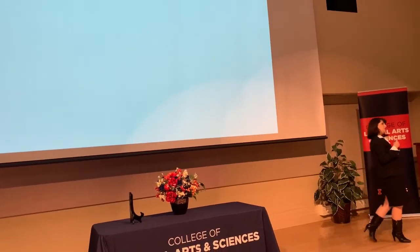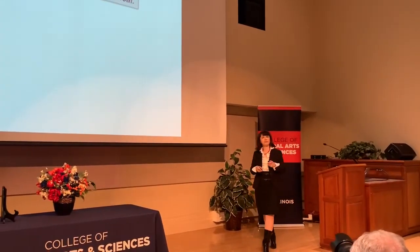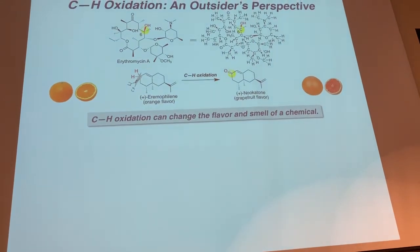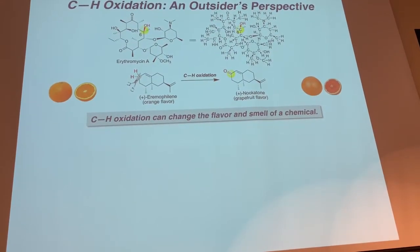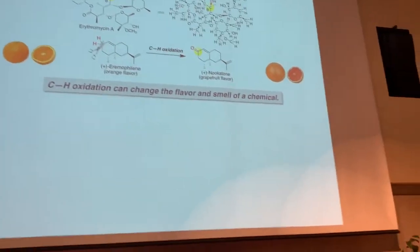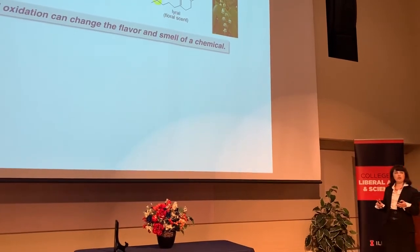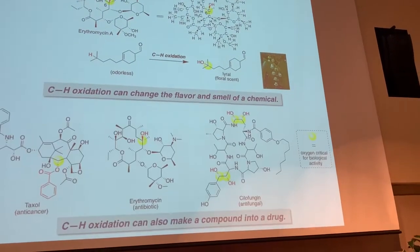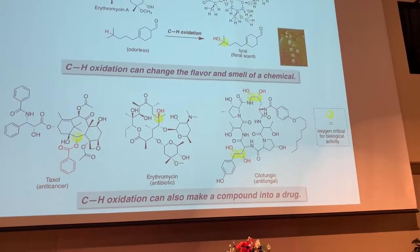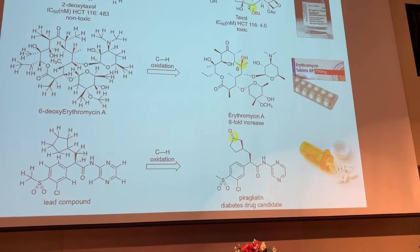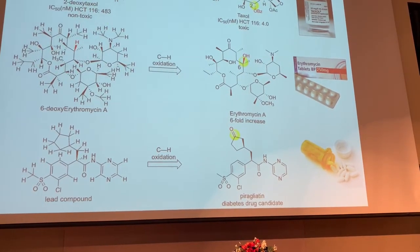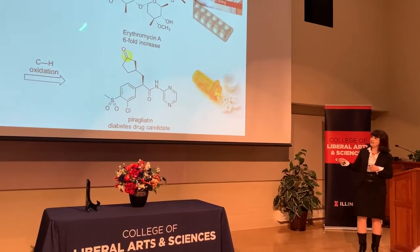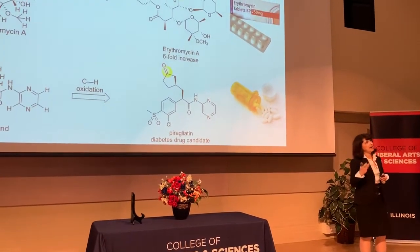The question becomes: how do you introduce this functionality and what importance does it have? This conversion—this atomistic change of CH bonds to things like oxygen—can change the way a compound tastes, taking something that tastes like oranges and converting it to something that tastes like grapefruit. It can change the way compounds smell, taking something non-fragrant and converting it to a powerful fragrance. And it can take compounds and make them into drugs—taking a non-toxic compound and converting it into one of the most powerful chemotherapeutic agents of our time, or increasing antibiotic potency.